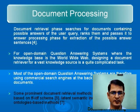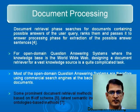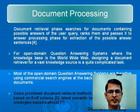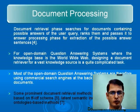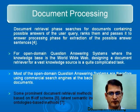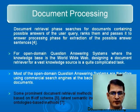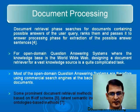The next phase of the question answering system is document processing. The document retrieval phase searches for documents containing possible answers to the user query, ranks them, and passes them to the answer processing phase for extraction of possible answer sentences. It is very difficult to design an independent document retrieval engine, particularly for open domain question answering systems. So most open domain systems at the backend use commercial search engines such as Google. Some prominent document retrieval methods are TF-IDF schemes — term frequency-inverse document frequency — latent semantic indexing, and ontology-based methods.